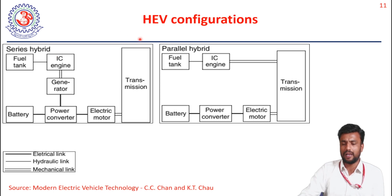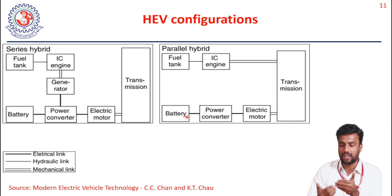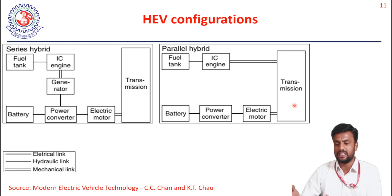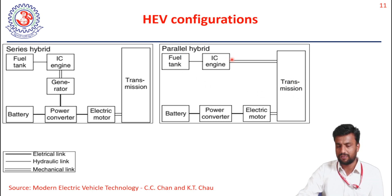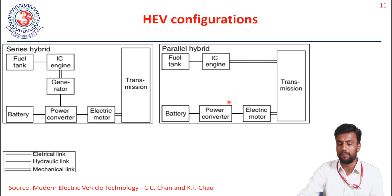In the parallel hybrid system, we again have a fuel tank and IC engine on one side, and battery backup with power converter and electric motor on the other. Both the IC engine and the electric motor independently transmit power to the wheels. The majority of power is delivered by the IC engine, with the electrical motor providing supplemental support. This is called the parallel hybrid system.